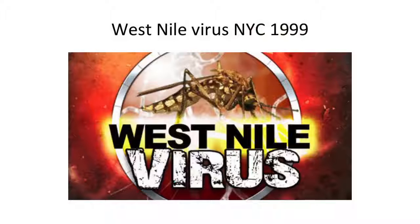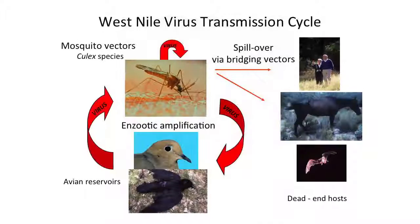You'll probably remember 1999 when West Nile virus appeared in New York City, actually in the borough of Queens. One of the things they noticed first was dead birds falling from the sky, and they had no idea what was going on. It turns out West Nile virus is a bird disease. There are mosquitoes that love to bite birds - they bite the birds, pick up an infection, amplify it inside the body, it gets into the salivary glands, and then they go feed on another bird and transmit it.